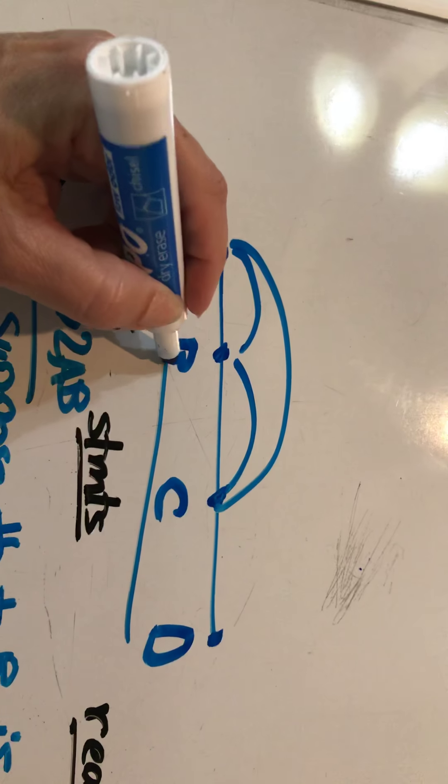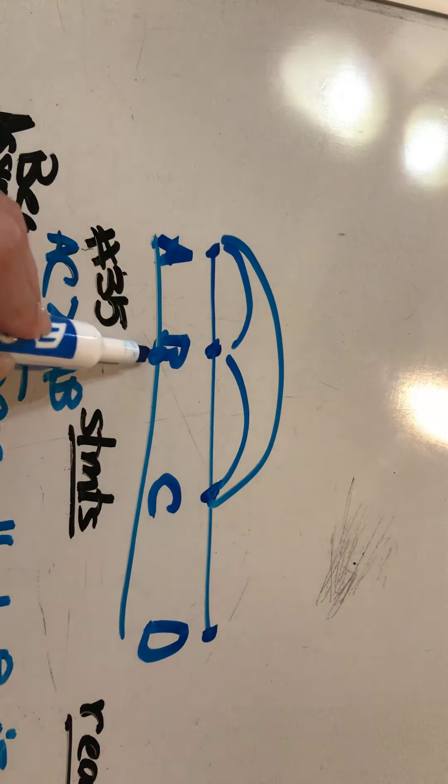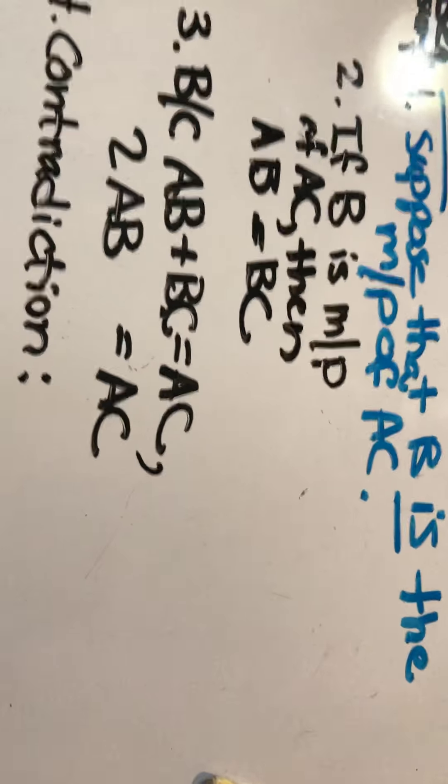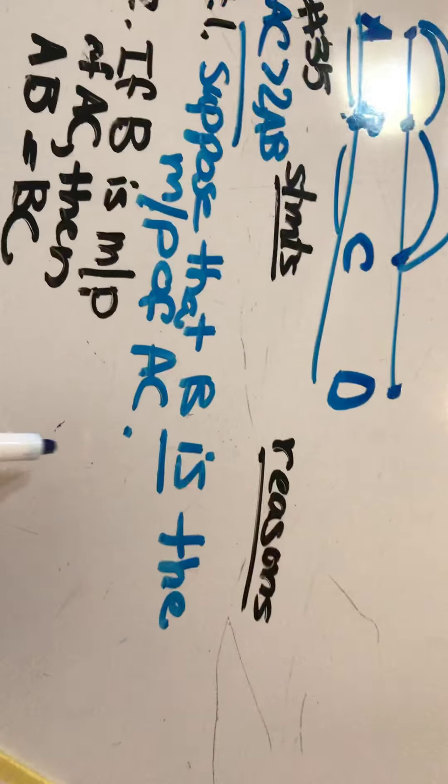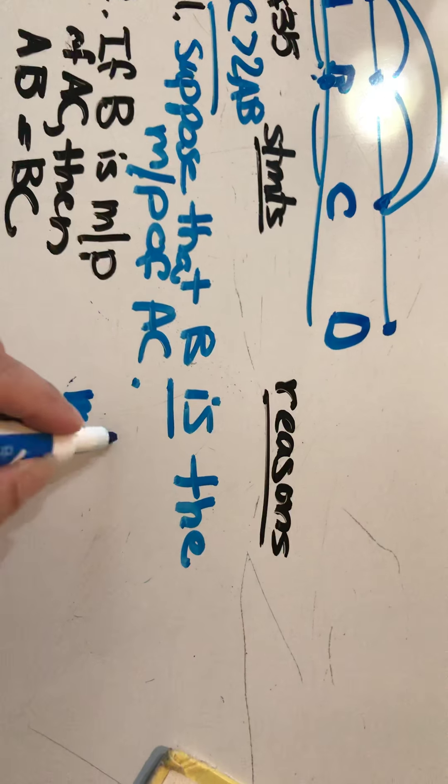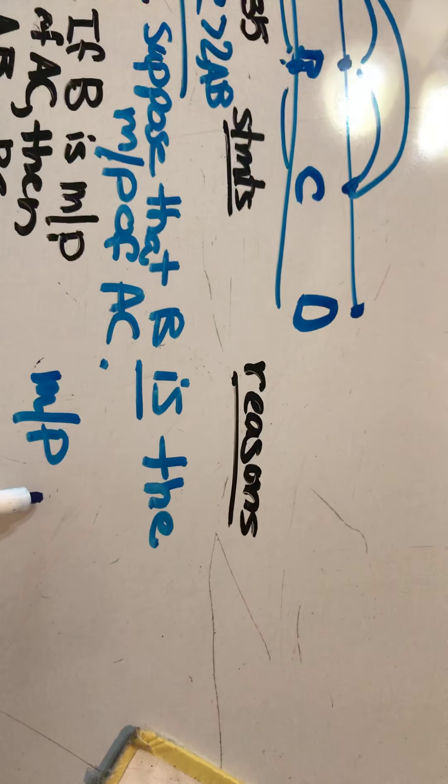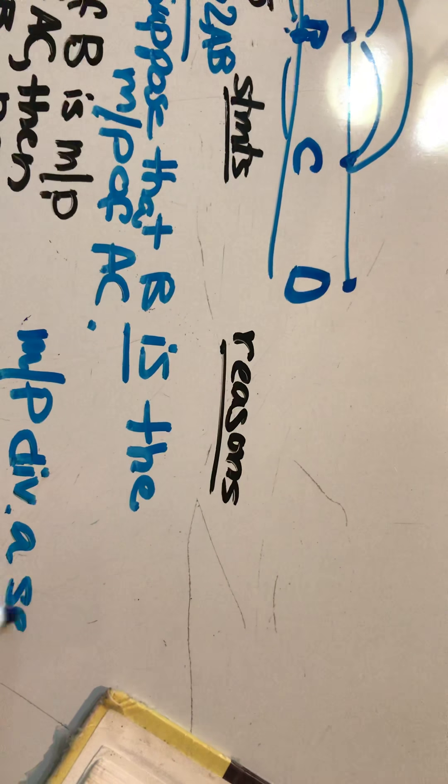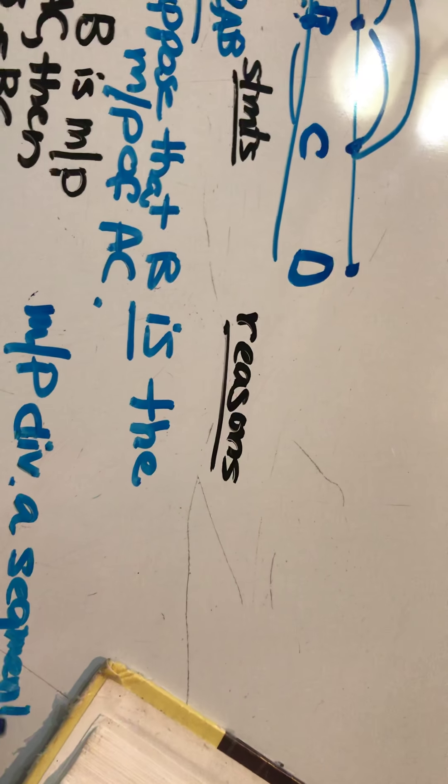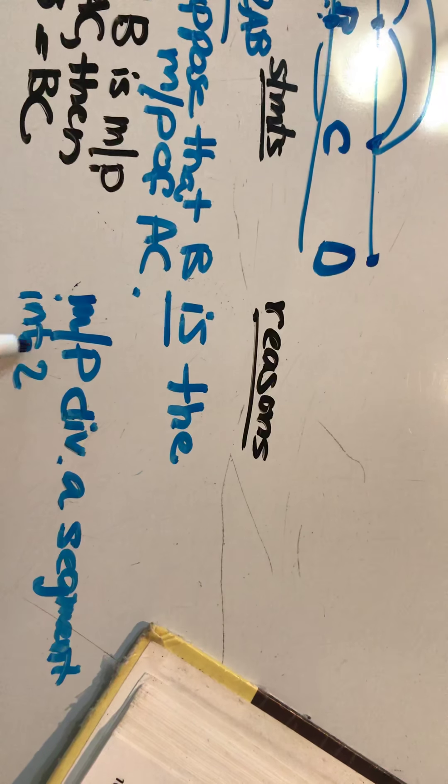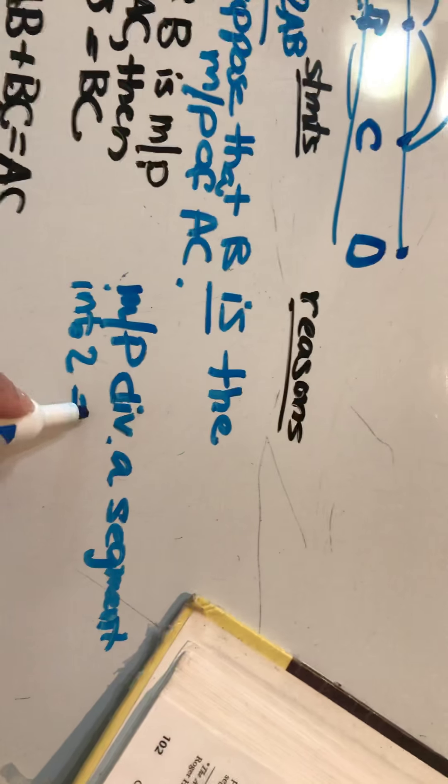So what it's saying is if this is actually the midpoint, then this length has to equal that length. And that is the definition of midpoint, right?